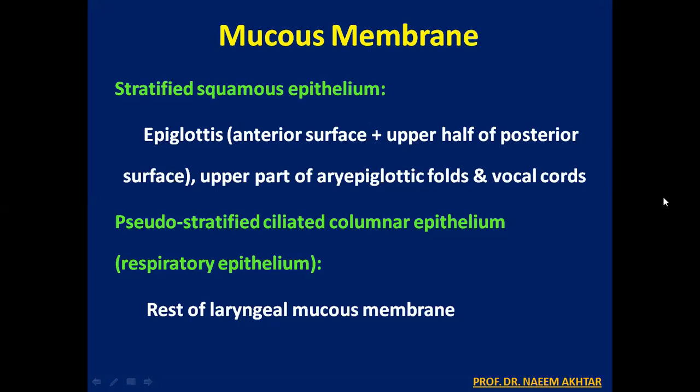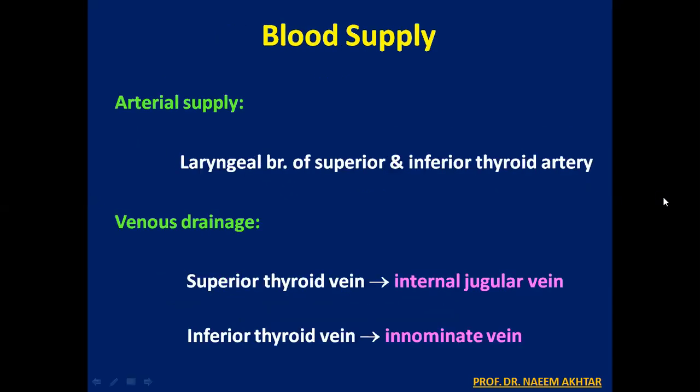The mucous membrane of the larynx has stratified squamous epithelium as well as pseudostratified ciliated columnar epithelium. The stratified squamous epithelium lines the epiglottis, its anterior surface and upper half of the posterior surface, the aryepiglottic folds, and the vocal cords. Pseudostratified ciliated columnar epithelium, also known as respiratory epithelium, lines the rest of the laryngeal mucous membrane. The arterial supply comes from the laryngeal branches of the superior and inferior thyroid arteries. Venous drainage from the superior thyroid vein drains into the internal jugular vein, while the inferior thyroid vein drains into the innominate vein.